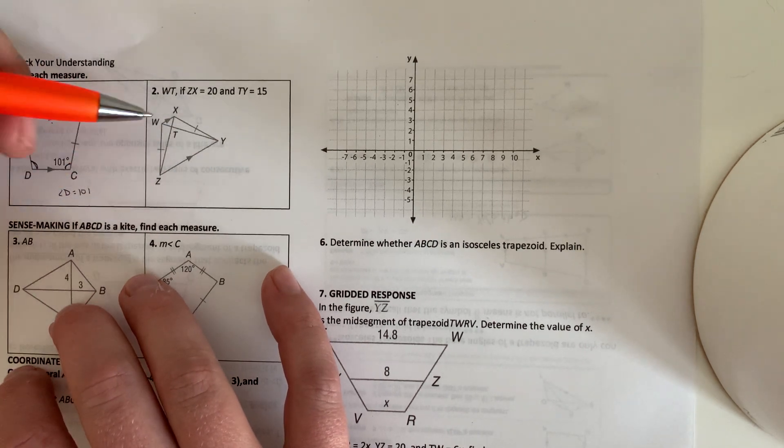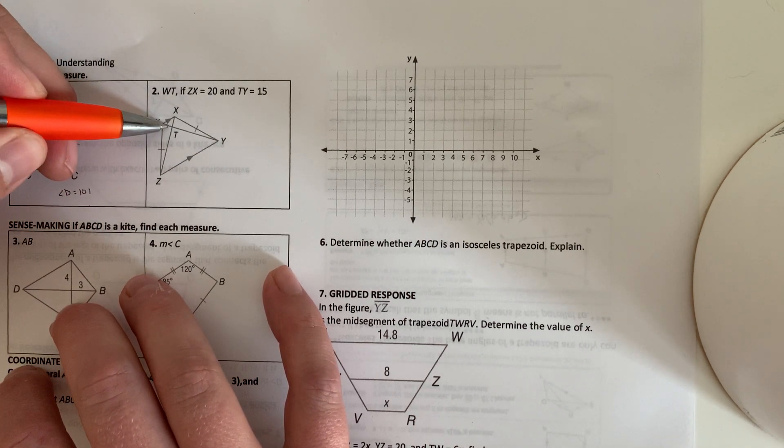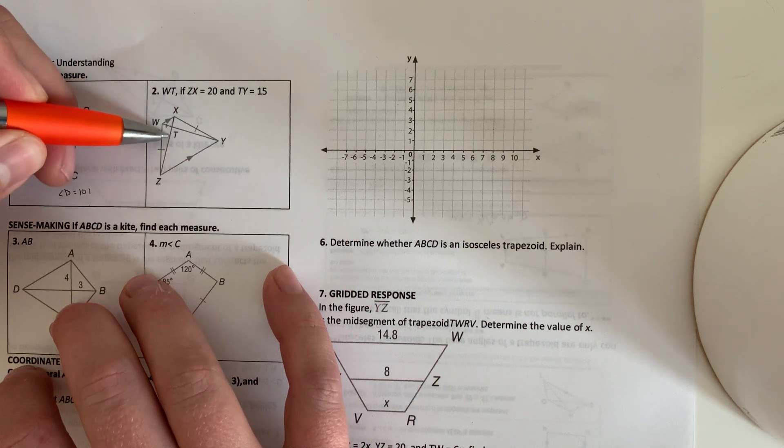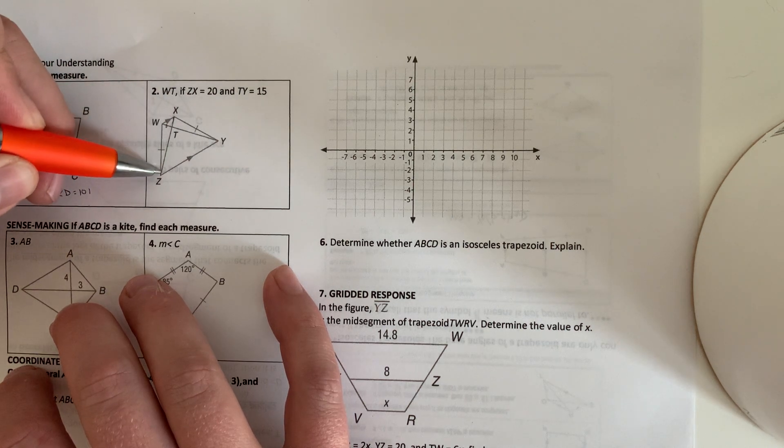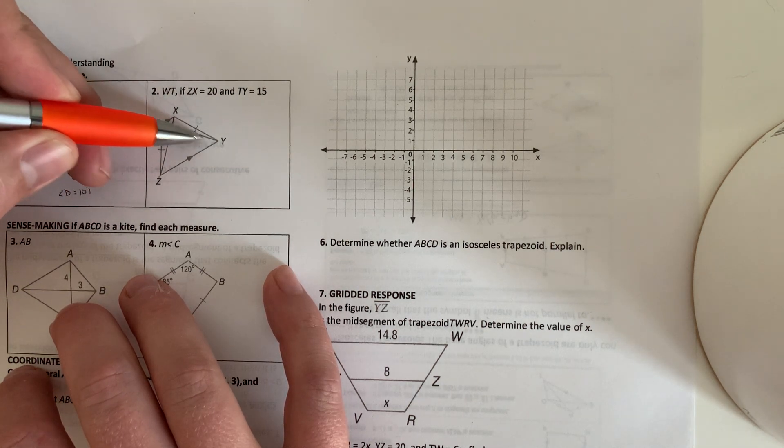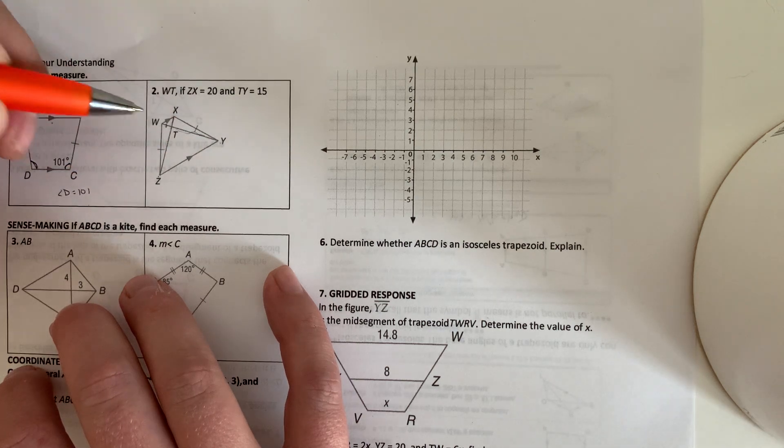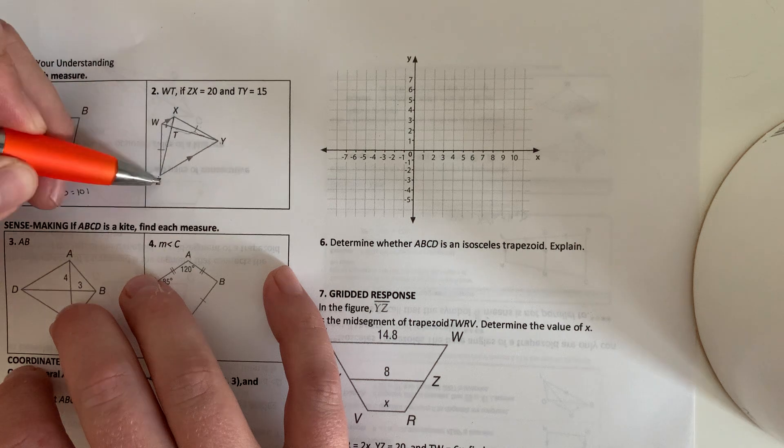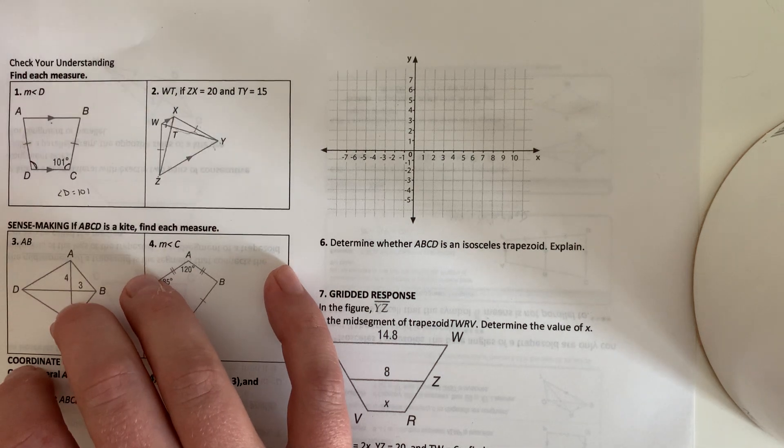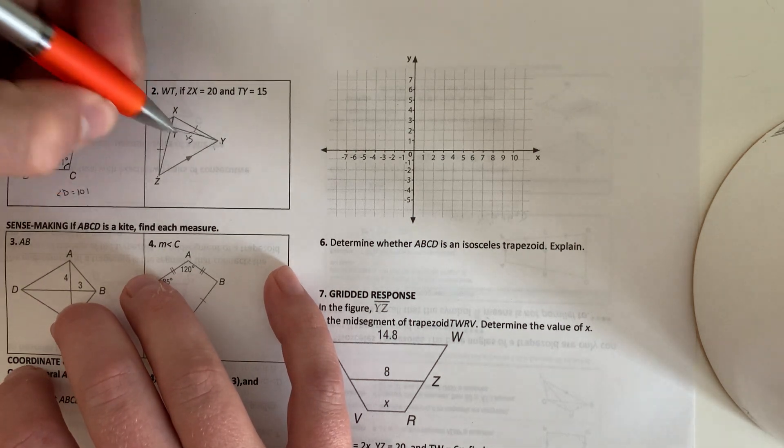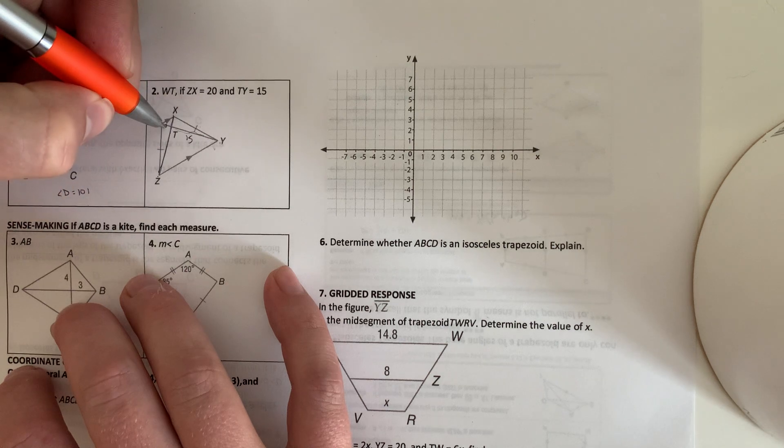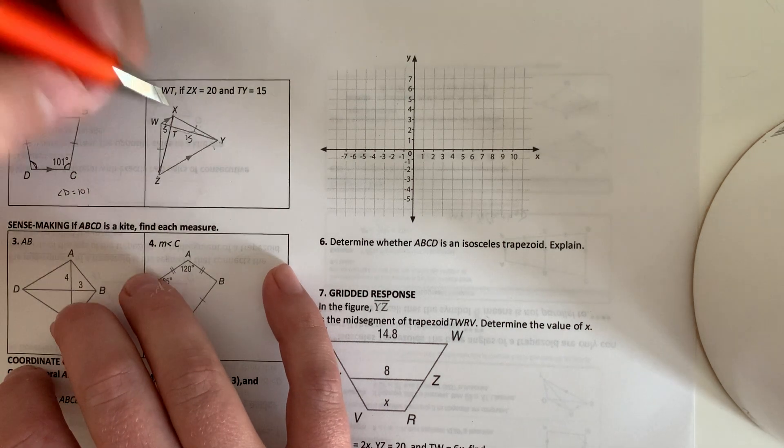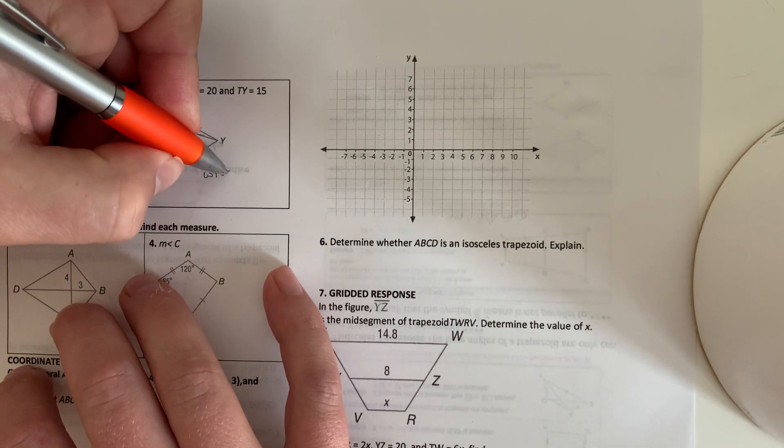Look at this figure here. We have WT, what we're trying to find. They give us this whole segment right here is 20, and then this little guy right here to here to here is only 15. Because these are marked congruent and these are marked parallel, these diagonals will be congruent. So since TY is only 15 and this whole is 20, we're missing 5 to make that whole 20. So WT is 5.